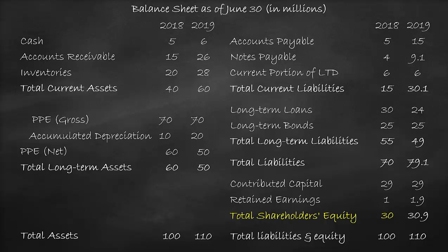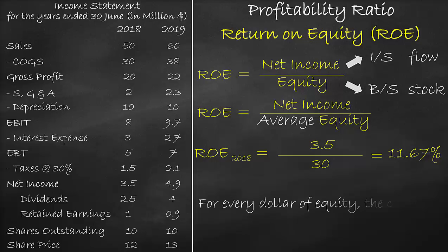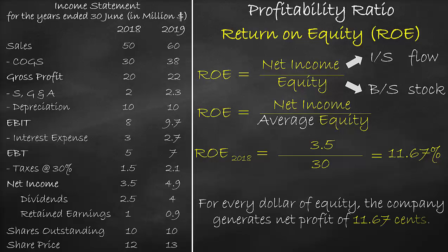So in our formula, we divide by equity of $30 million, which equals 11.67%. The unit of ROE is a percentage. This means that for every dollar of equity, the company generates a net profit of 11.67 cents. For all profitability ratios, the higher, the better.